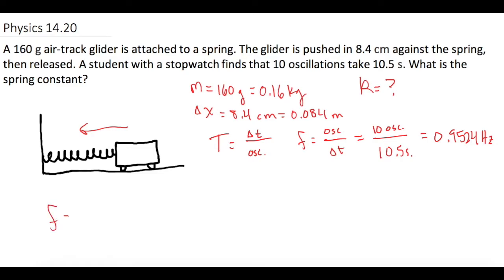Two that I can use are: frequency equals 1 over 2π times the square root of k over m, or I can use the period equals 2π times the square root of m over k.